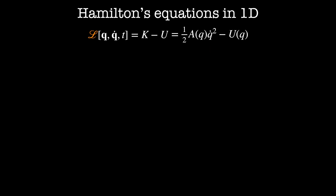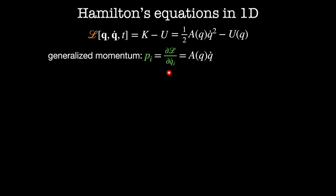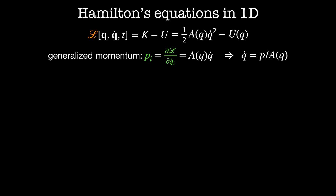Then the generalized momentum P_i is equal to dL by dQ_i dot, which is equal to A of Q times Q dot. This lets us rewrite Q dot as a function of Q's and P's, which is equal to P divided by A of Q.